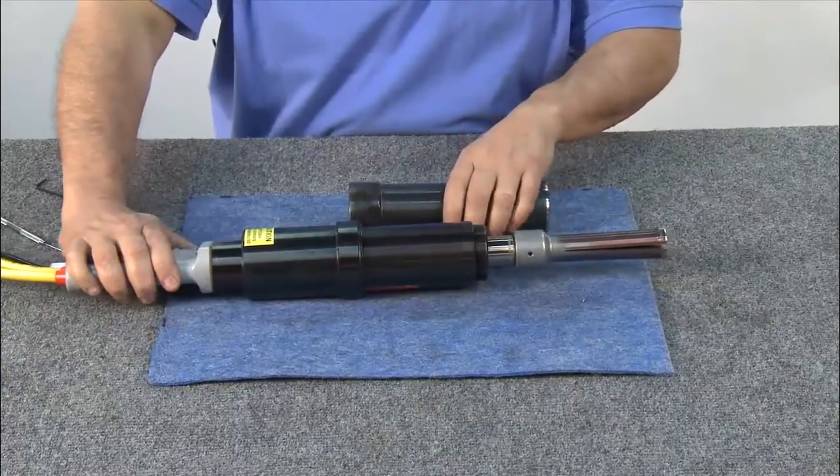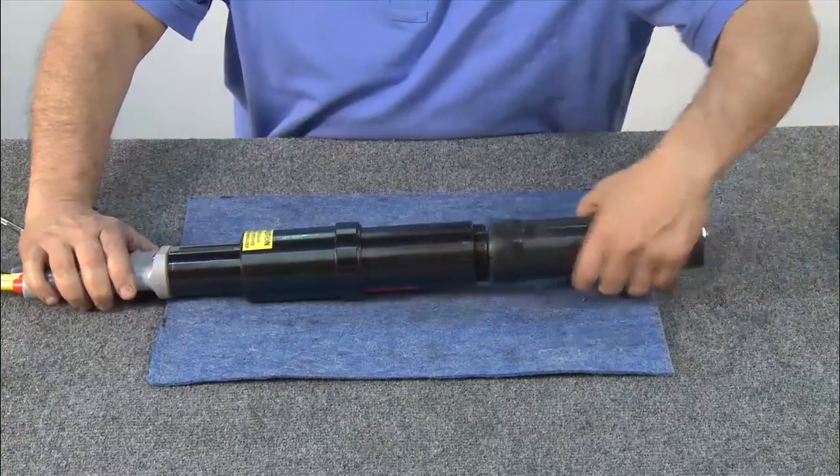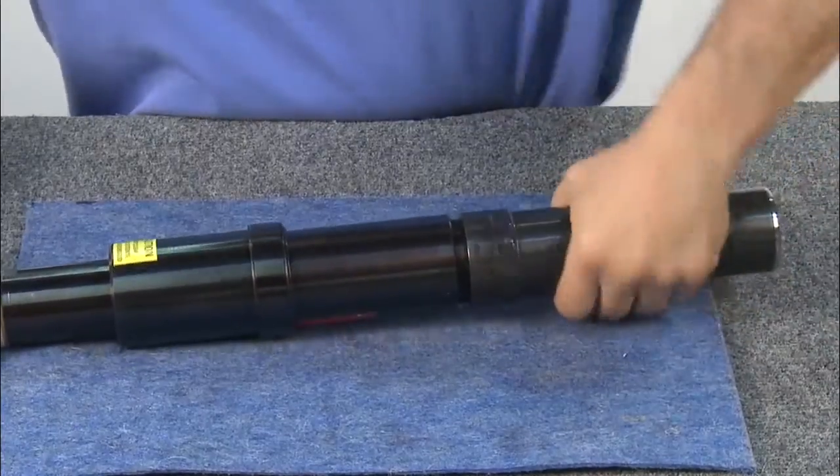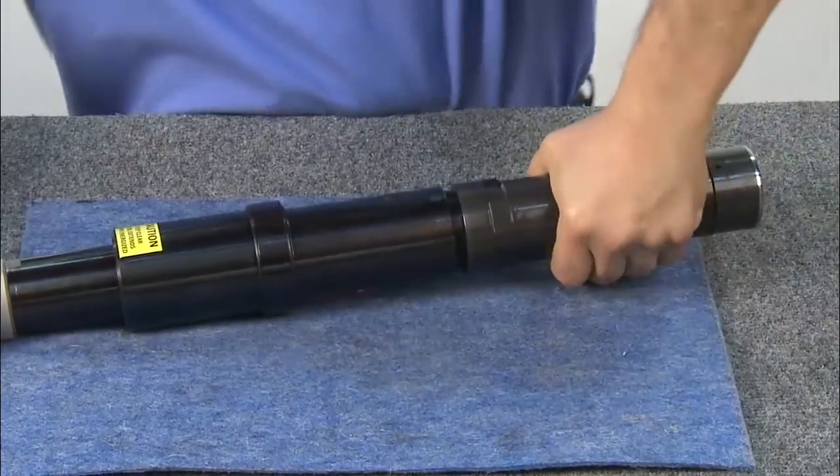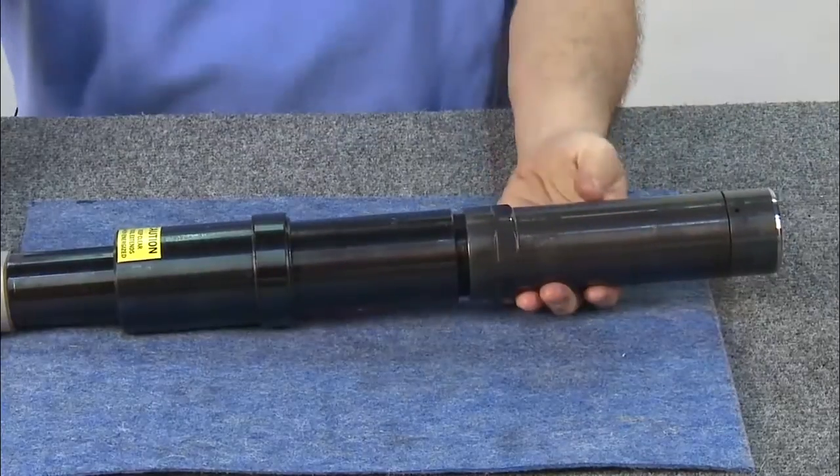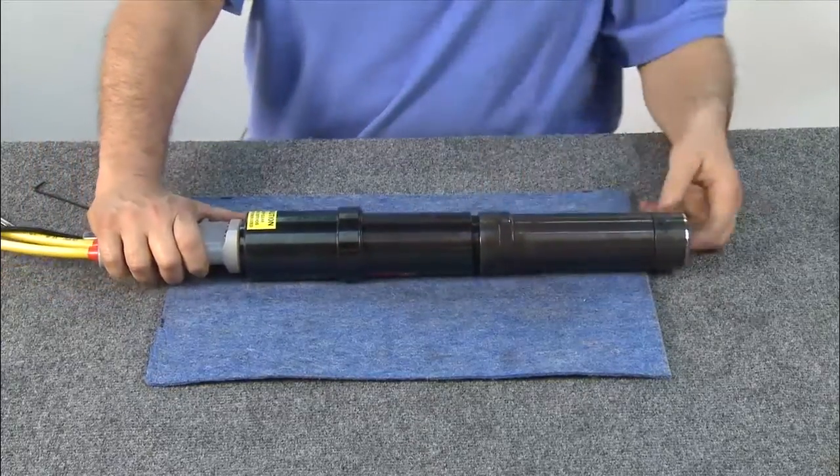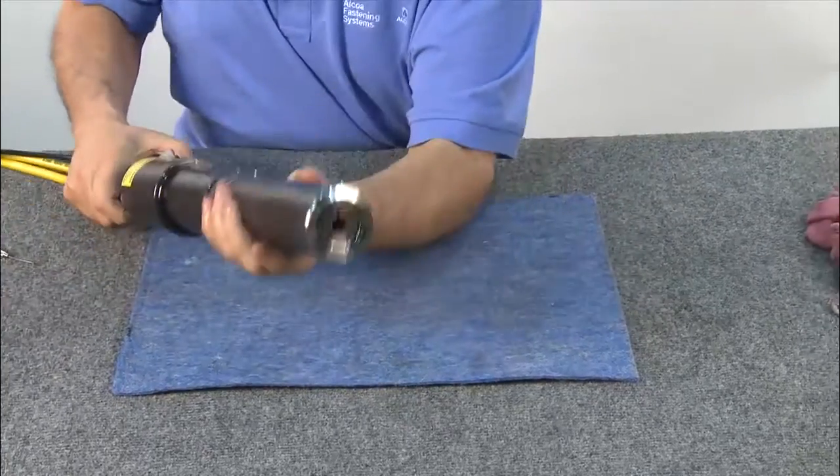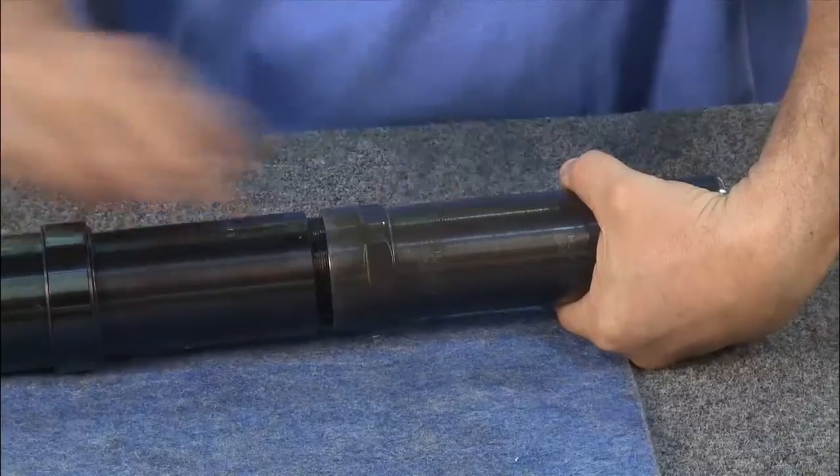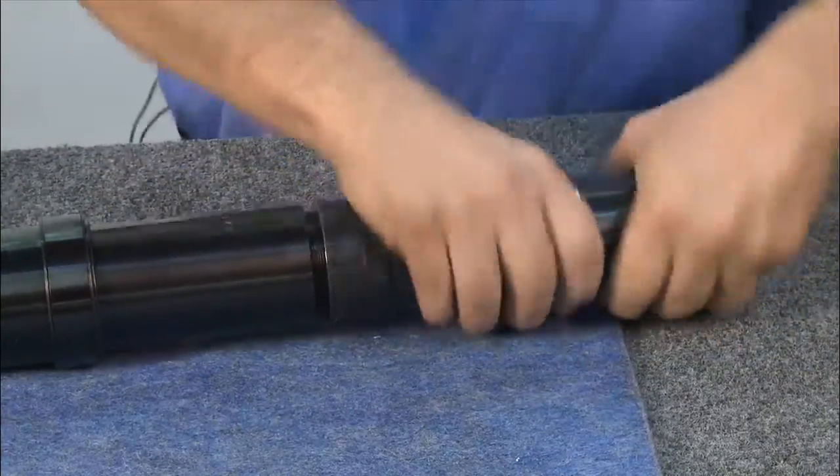Next, cycle the piston all the way back and thread on the anvil holder until it gets tight. Let go of the trigger. Notice that the puller is in the forward position and centered in the holder. Continue to thread the anvil holder down until it bottoms.